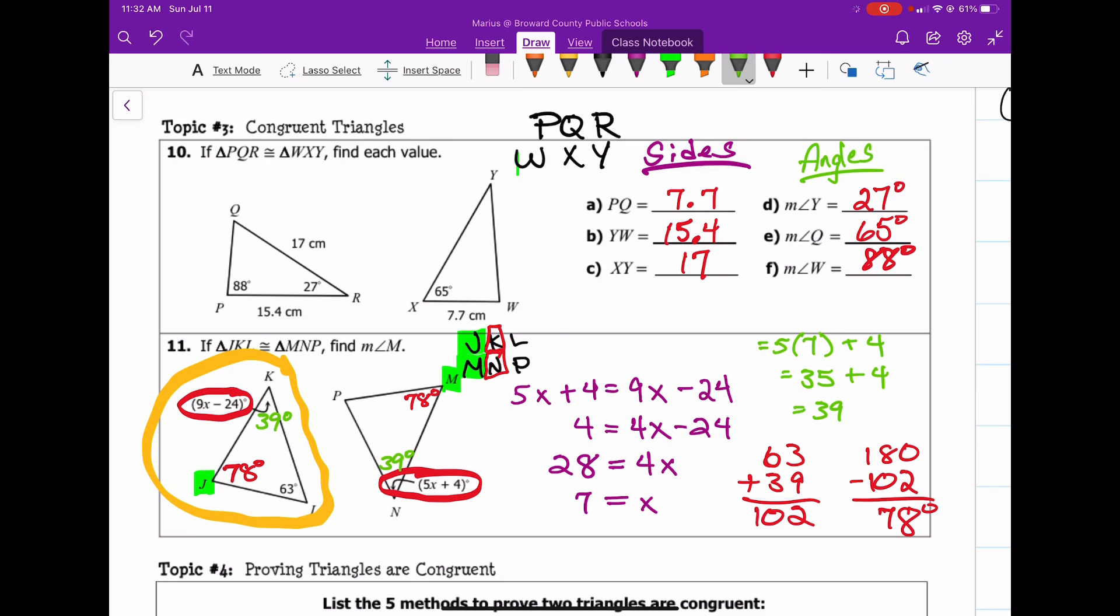And that, ladies and gentlemen, will be our final answer. Angle M is 78 degrees. Final answer. All right. I hope that helped some of you all out. Understanding congruent triangles. Have a great day and see you back later.